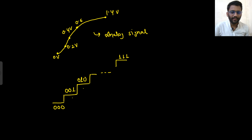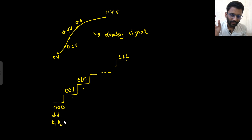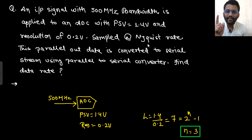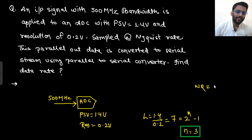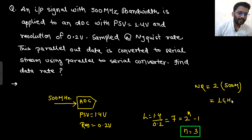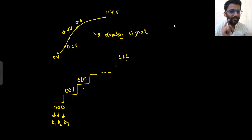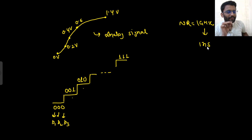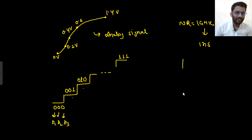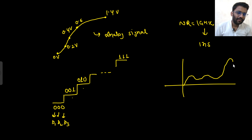So we need three bits: B1, B2, and B3. The problem states the ADC is sampled at the Nyquist rate. The Nyquist rate is 2 × input bandwidth = 2 × 500 MHz = 1 GHz. This means the ADC samples data every 1 nanosecond. Let's mark the timeline: 0 ns, 1 ns, 2 ns, 3 ns, 4 ns.